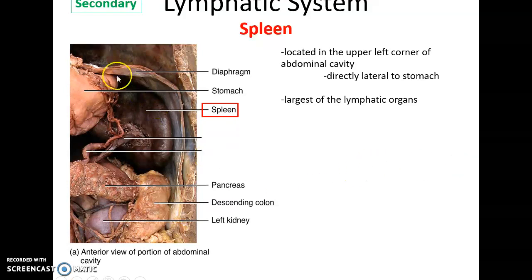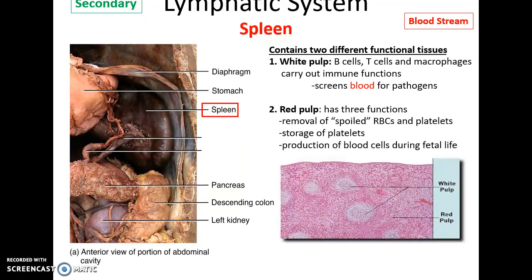The spleen is the largest of the lymphatic organs, located in the upper left corner of the abdominal cavity. It has white pulp and red pulp. White pulp has lots of B cells, T cells, and macrophages that screen the blood for pathogens. Red pulp has a variety of functions including removing aged red blood cells and platelets, storing extra platelets (thrombocytes), and it can produce blood cells as it did back when we were a fetus.